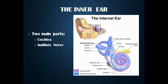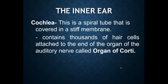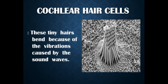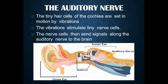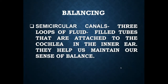The inner ear is divided into two parts: the cochlea and the auditory nerve. The cochlea is a spiral tube containing a number of hair cells attached to the organ of Corti. The cochlear hair cells are very small and they bend due to vibrations caused by sound waves. These vibrations then stimulate the nerve cells, which send signals through the auditory nerve to the brain.